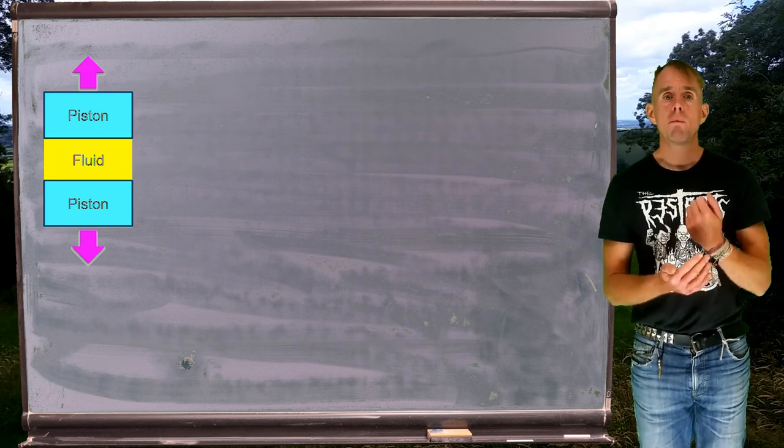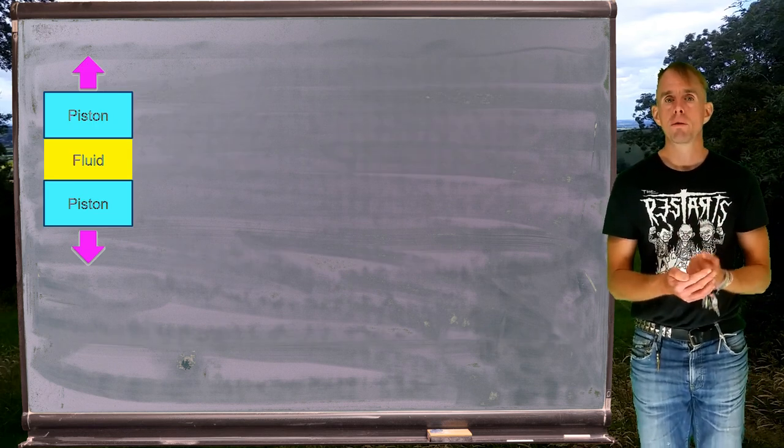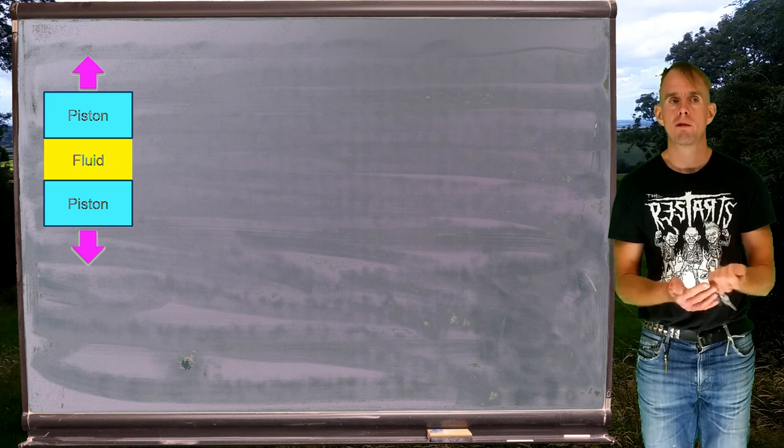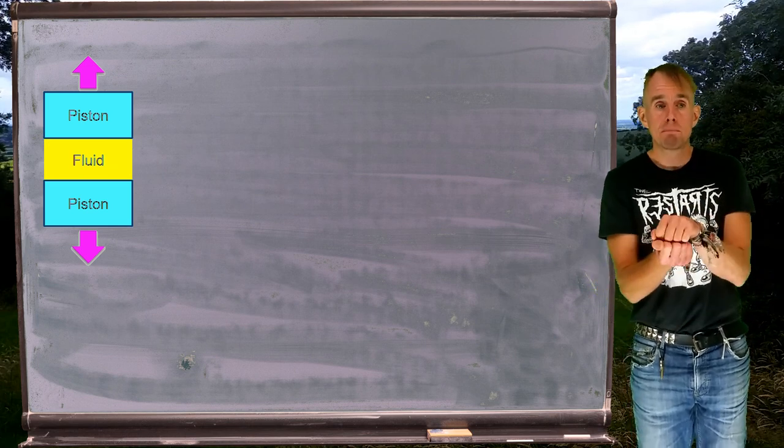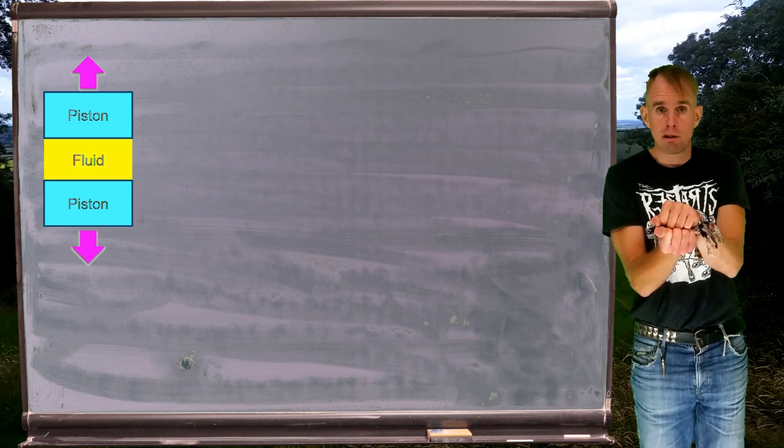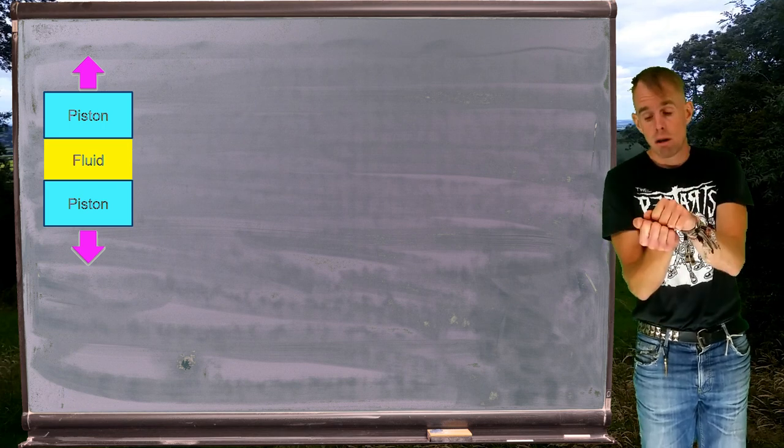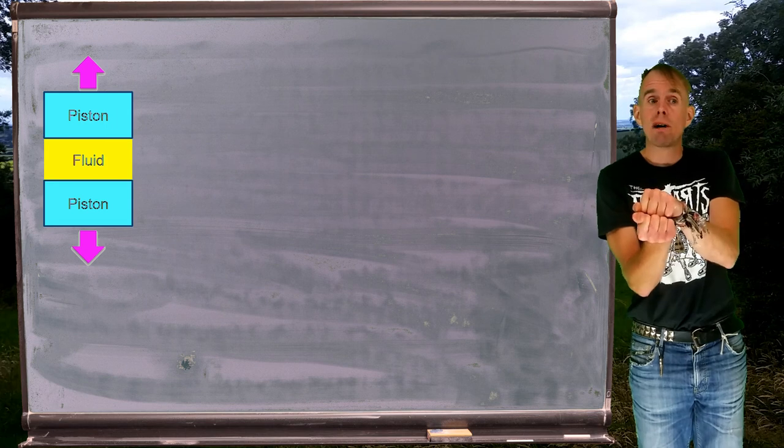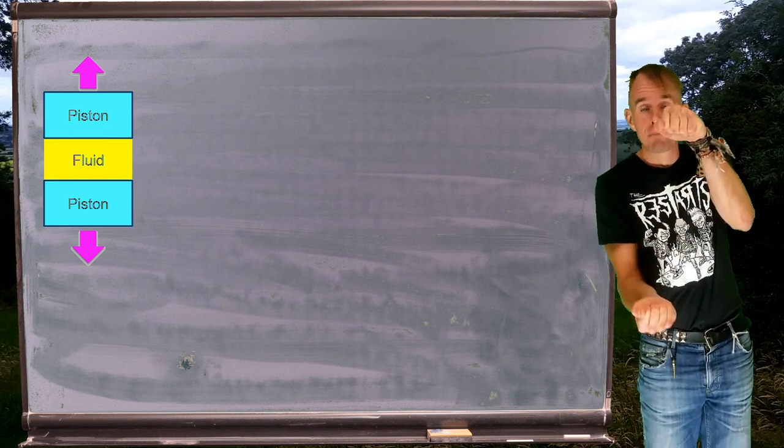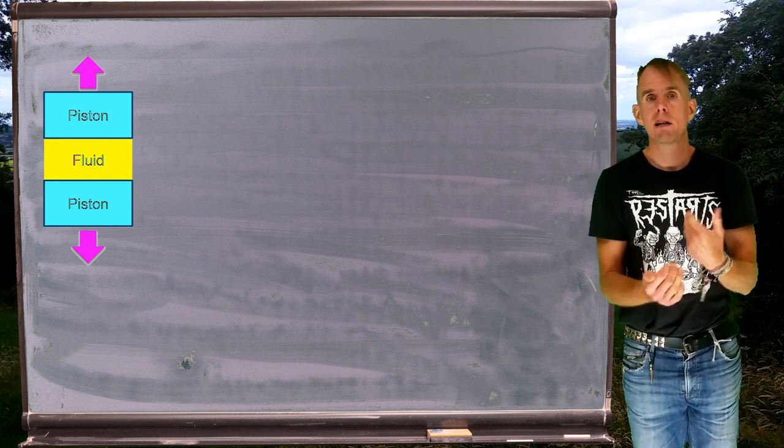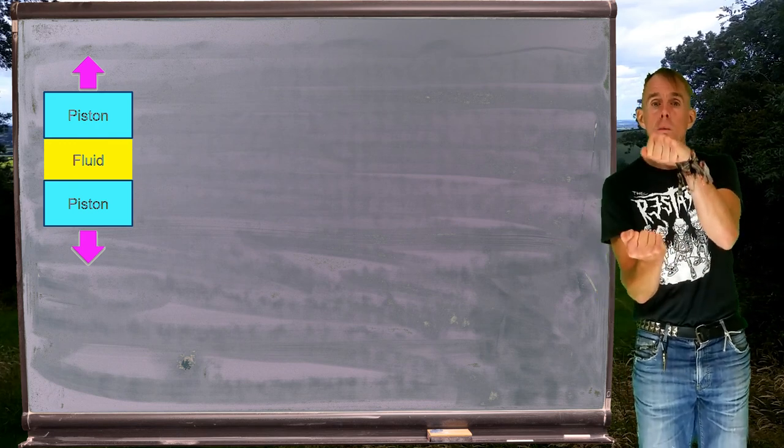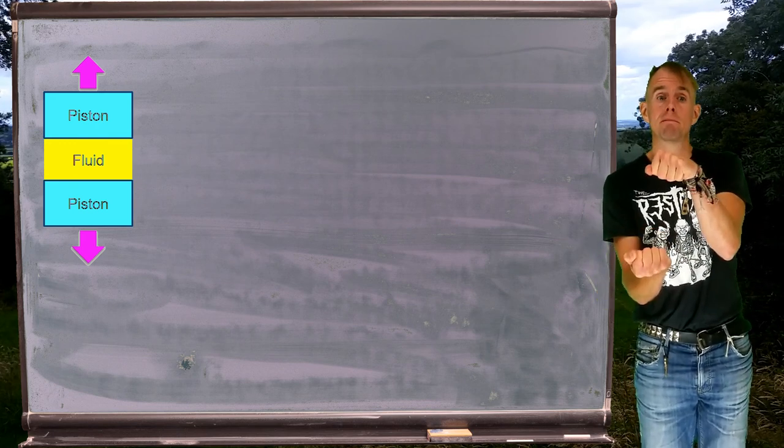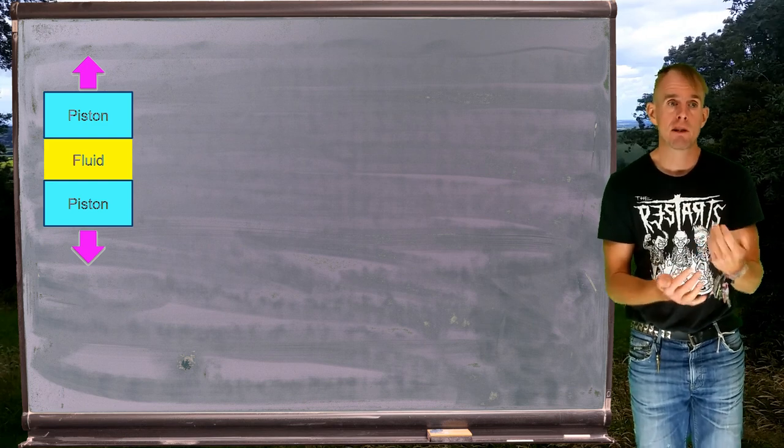The technique we're going to look at is one called capillary breakup extensional rheometry. It is one of a family of techniques that involve getting a fluid between two pistons and pulling it apart. One other technique looks at how the filament forms as the pistons move. Capillary breakup rheometry looks at what happens to the fluid once the pistons have stopped moving. So let's look schematically how we achieve this.